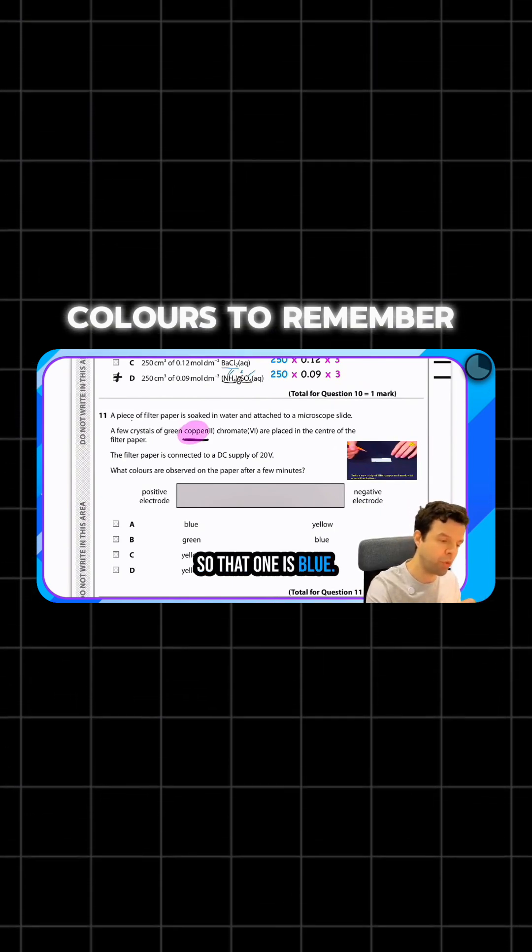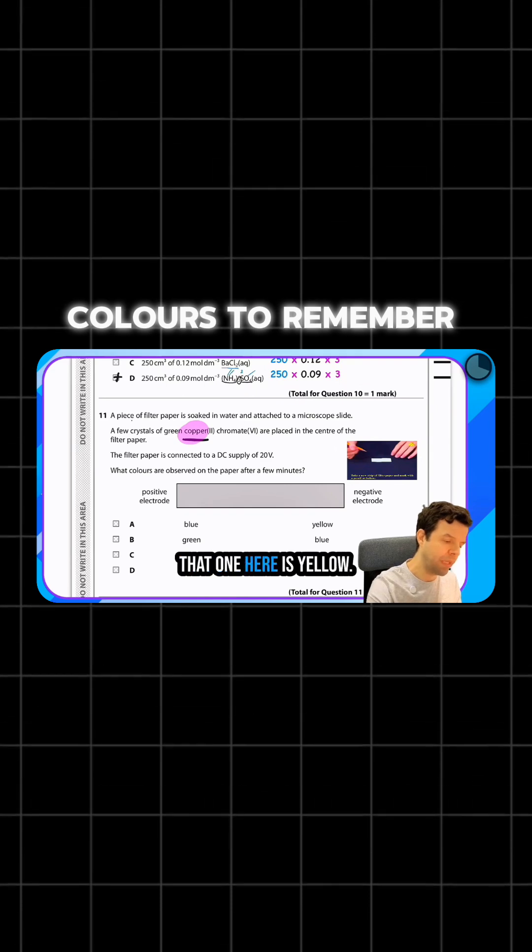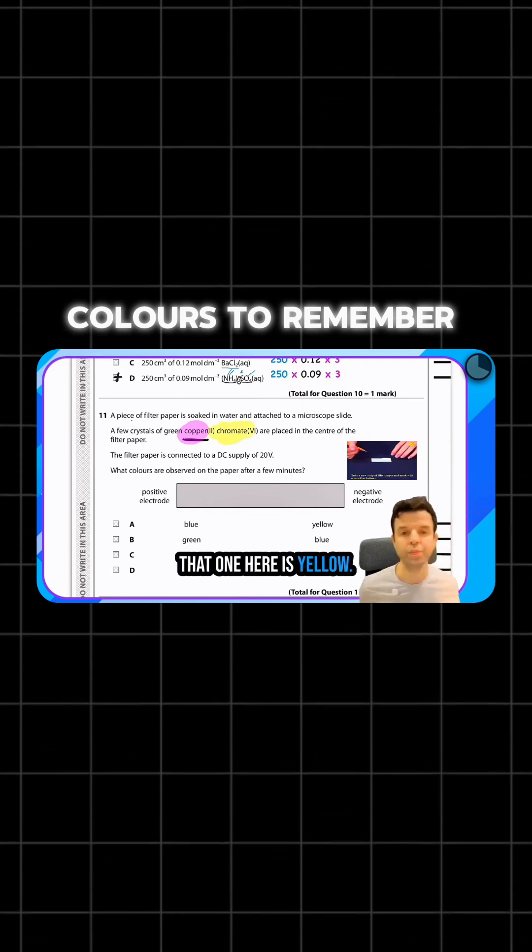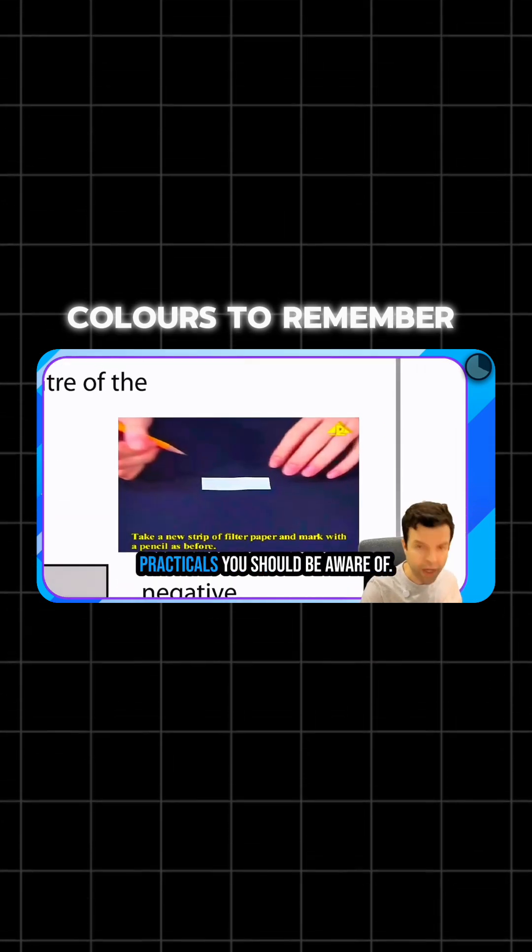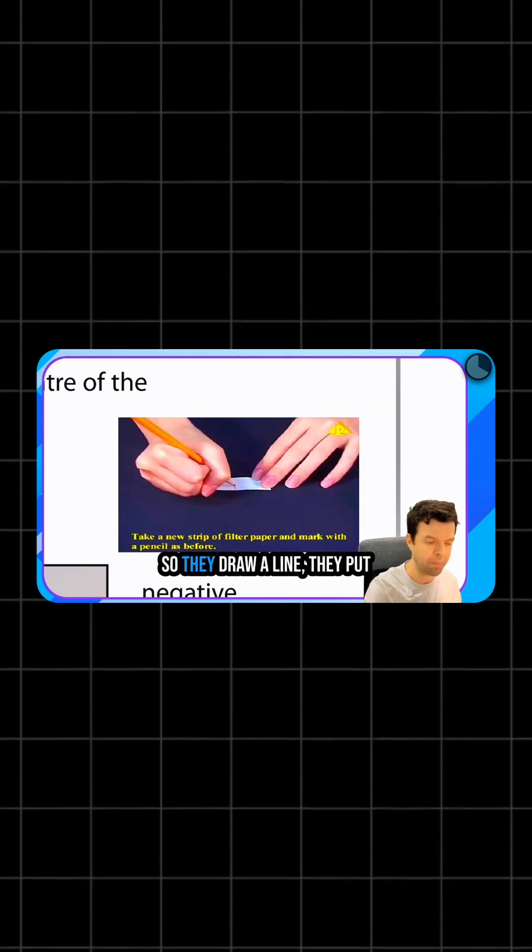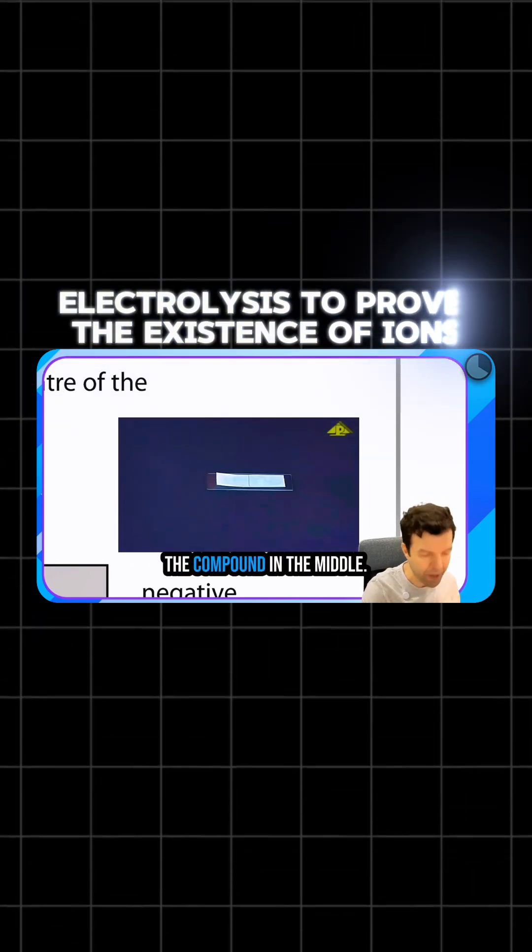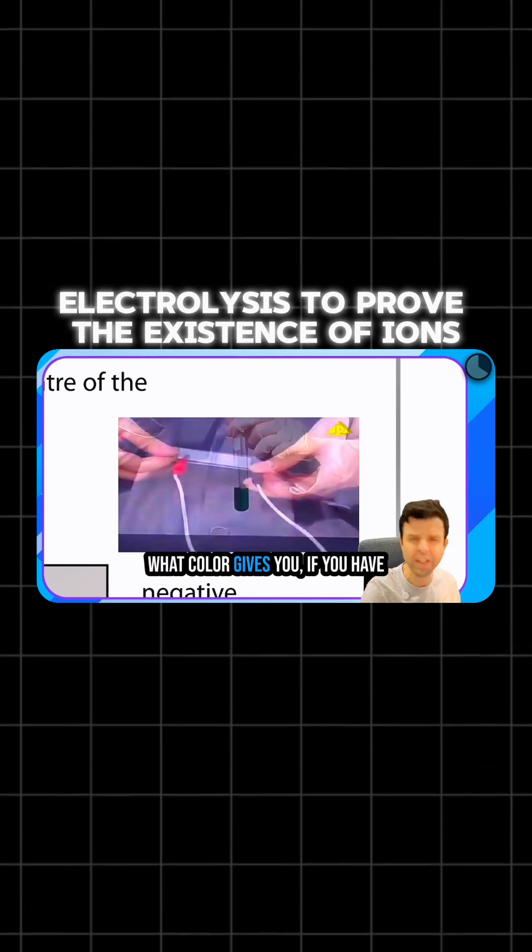You know what copper ion's color is? That's blue. That one is blue, that one here is yellow. Because that's one of the practicals you should be aware of, they draw a line and put the compound in the middle.